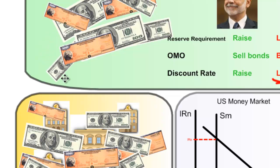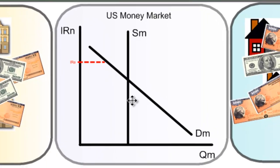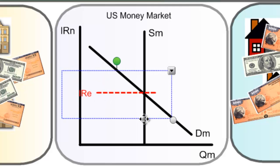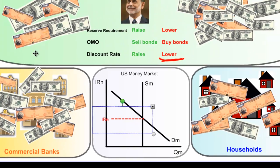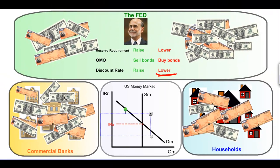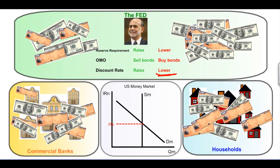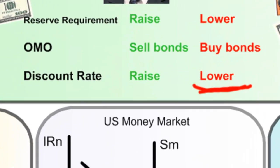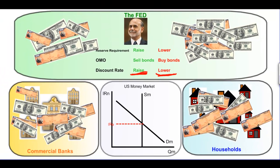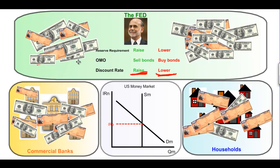If the Federal Reserve lowers the interest rate it charges banks for short-term loans, this makes it cheaper for commercial banks to borrow funds from the Fed. The supply of money in the banking system increases, causing the equilibrium interest rate to decrease. Reducing the discount rate makes it cheaper for banks to borrow money from the Federal Reserve, which makes it cheaper for households to borrow money from banks. Conversely, if the Fed raises the discount rate, it becomes more expensive for commercial banks to borrow from the Fed, the supply of money decreases, and fewer commercial banks will make risky loans.